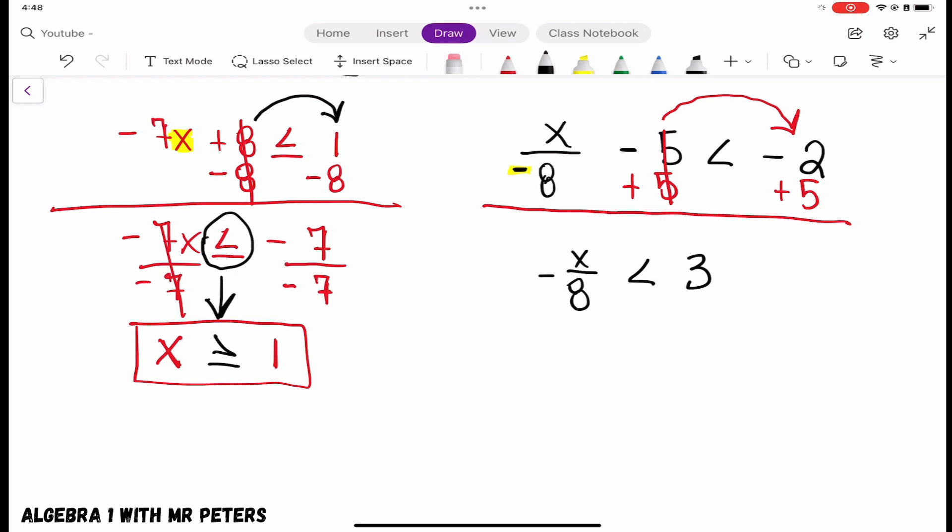And then to get rid of our negative now, what I'm going to do is I want to multiply by negative 8 over 1, so we could get rid of that fraction. Our 8s cancel out. All we're left with is x on that left-hand side. And then I'm going to multiply by negative 8 on the other side. So now, 3 times negative 8 is going to give us negative 24.